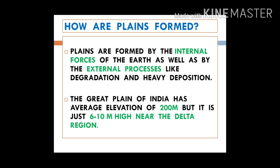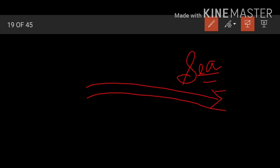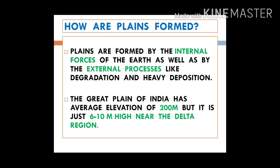A good example is the Great Plain of India. Its average elevation is 200 meters, but by the time it reaches its delta region its height is only 6 to 10 meters. Rivers flow over the plains, and when a river reaches its mouth near the sea, its slope becomes very low — dropping from over 100 meters above sea level to just 6 to 10 meters at the delta region.